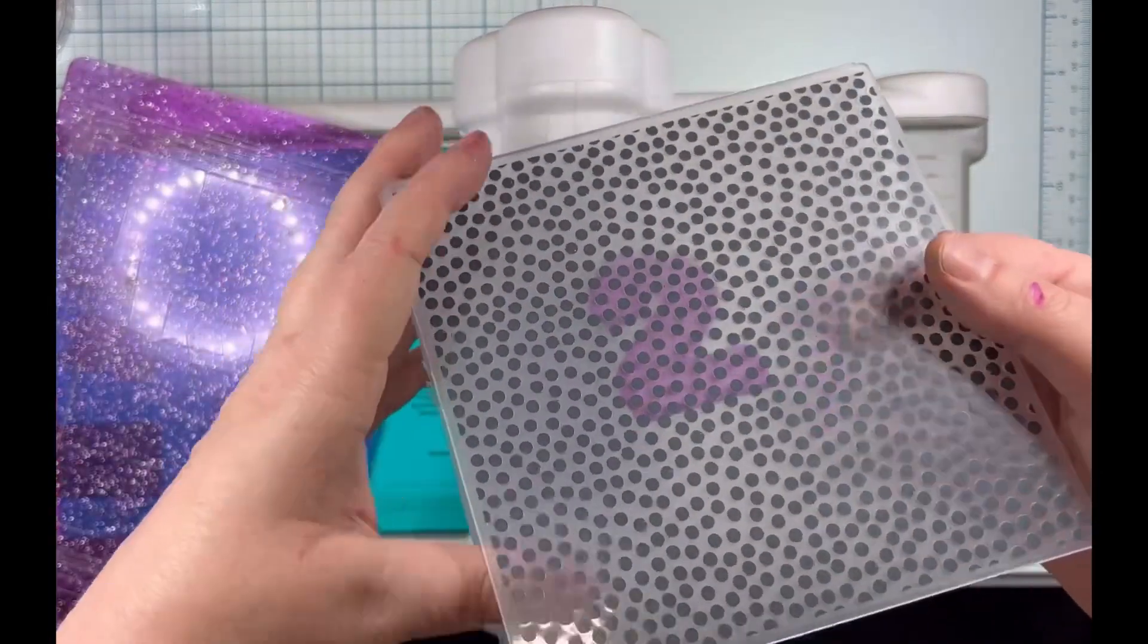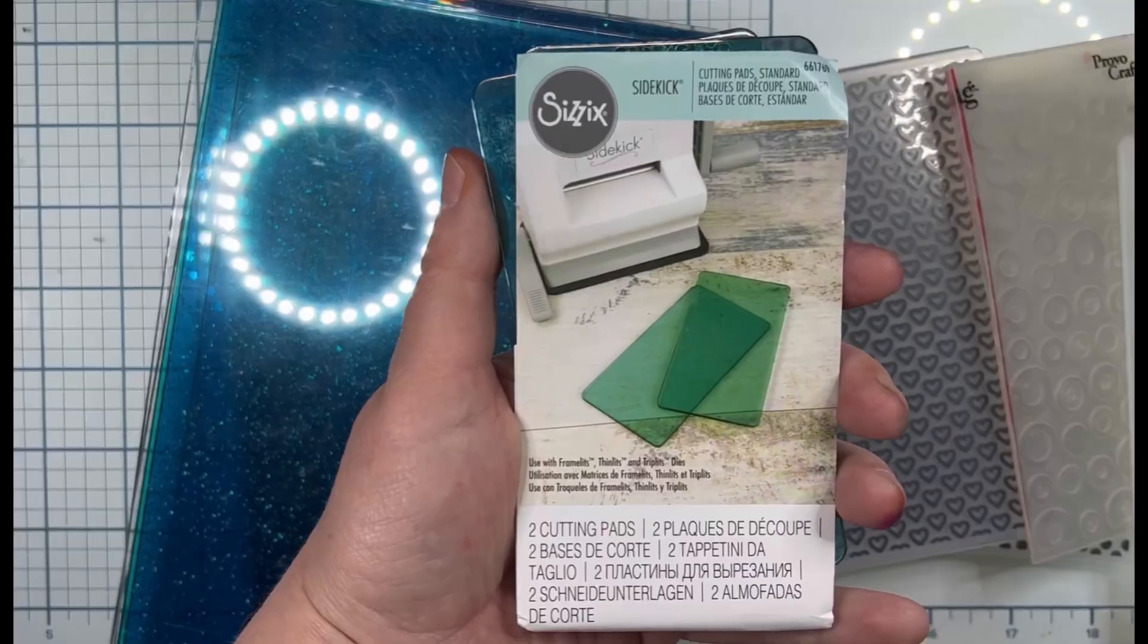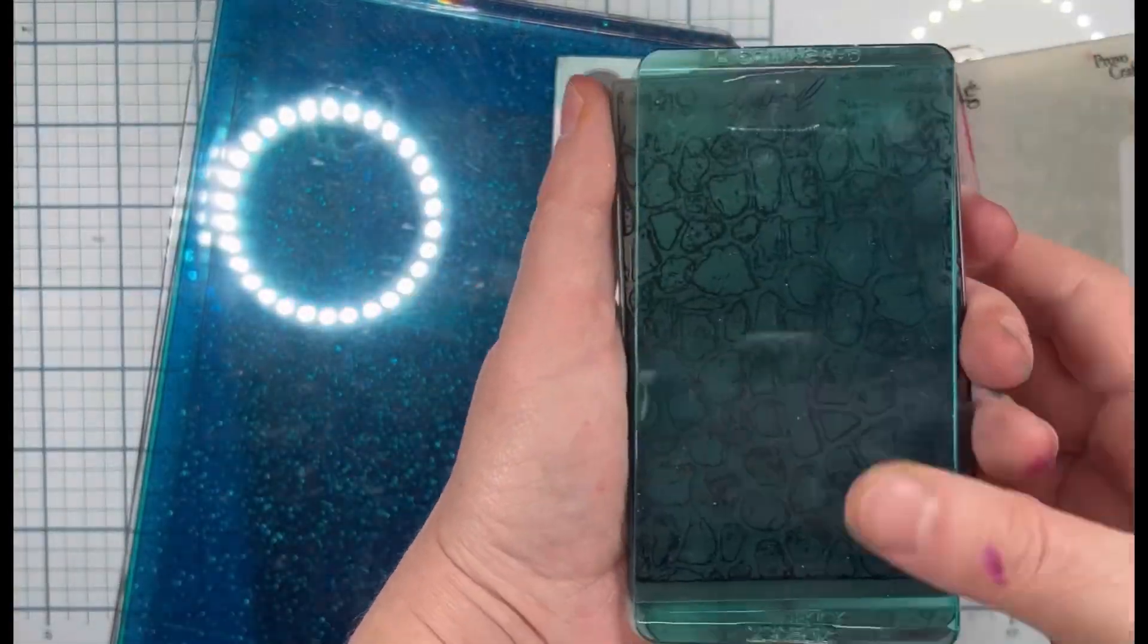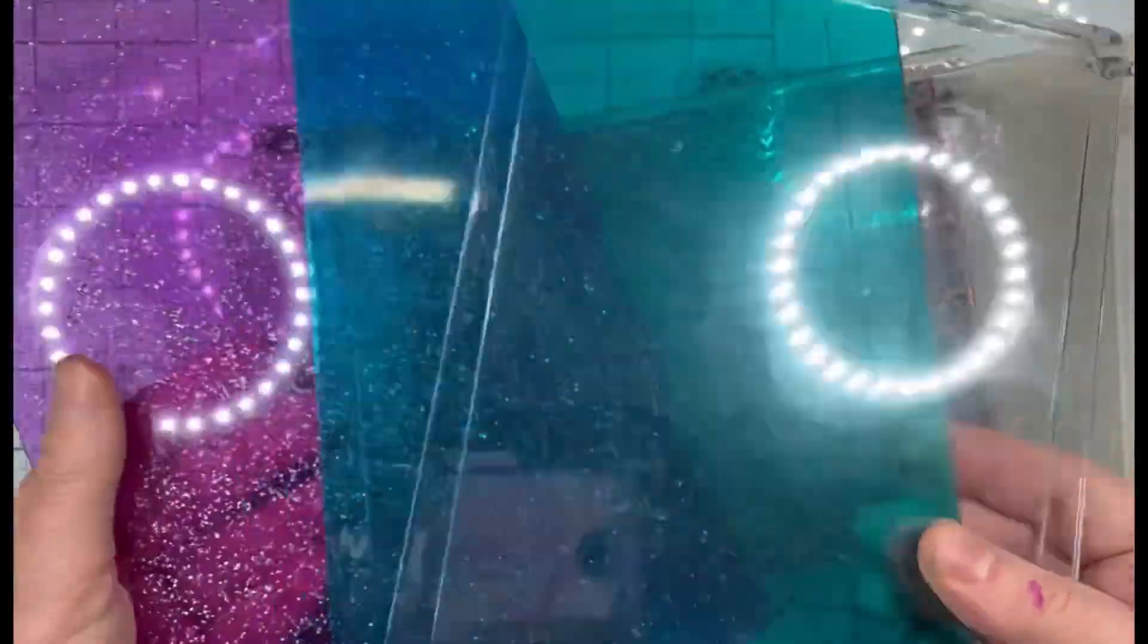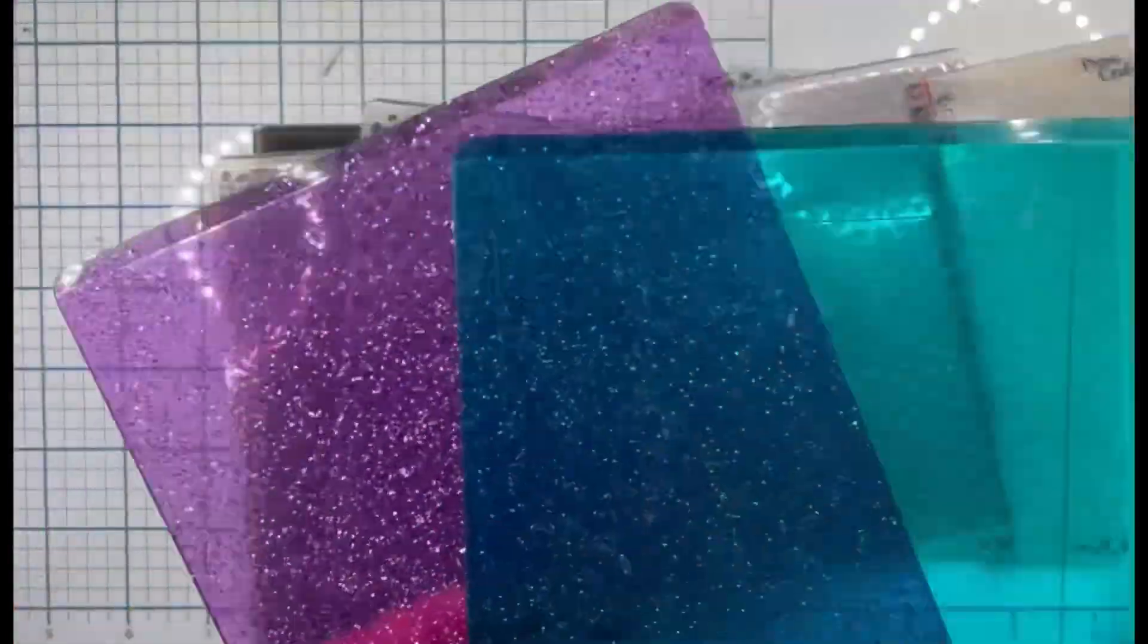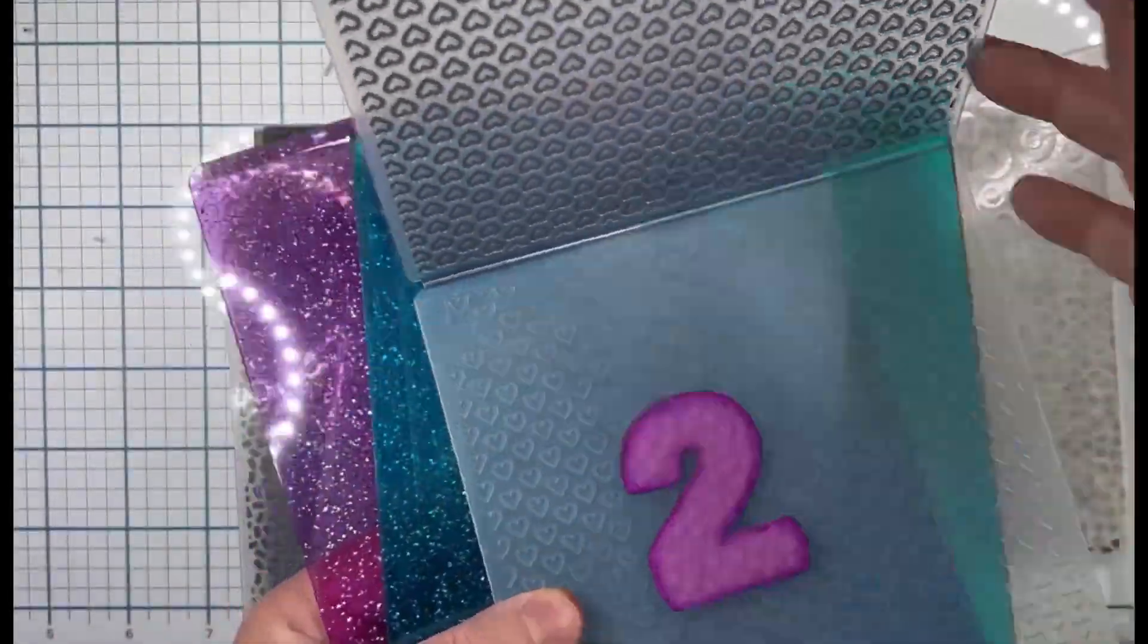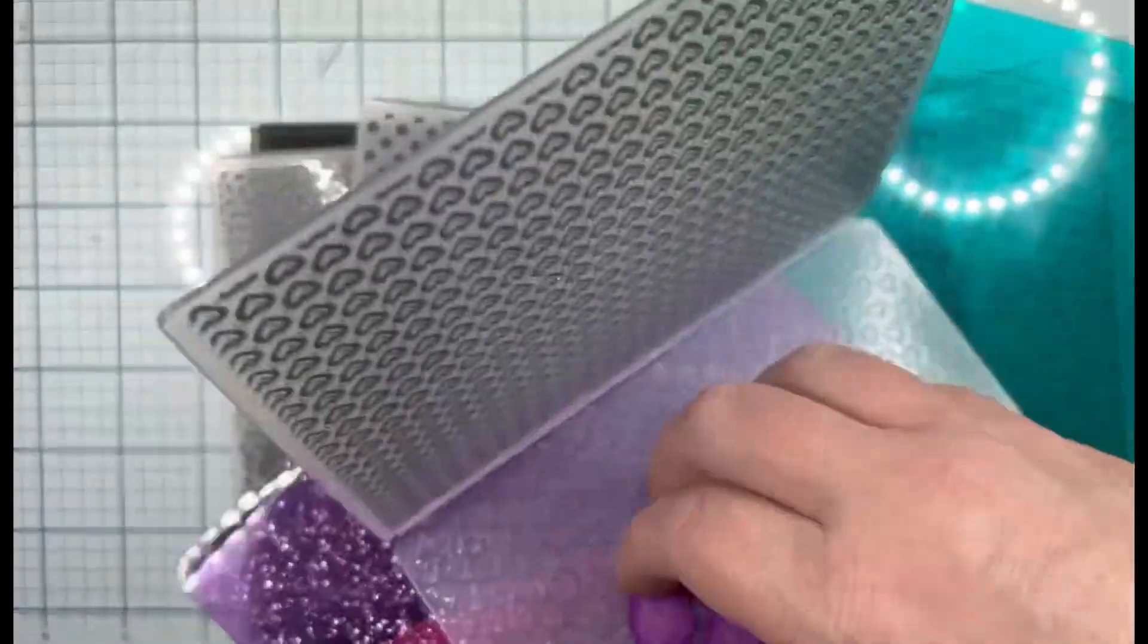There are tons of embossing folders. You can get them from Amazon, Hobby Lobby, or just go into Google, type embossing folders, and click the shopping tab. These are just a few I have. They go between the plates and then into the machine.